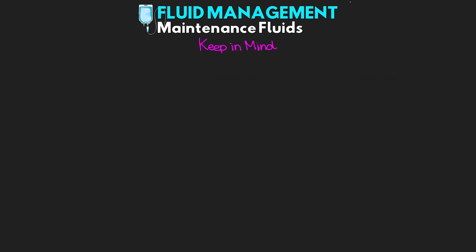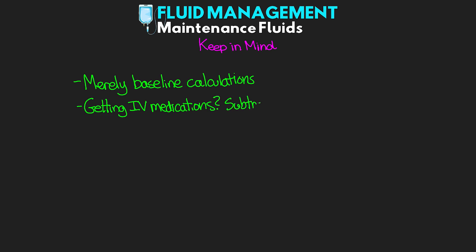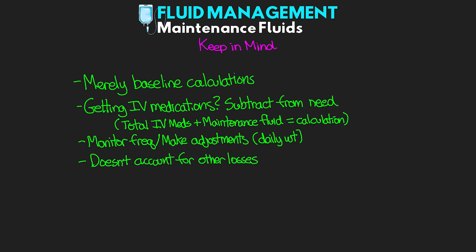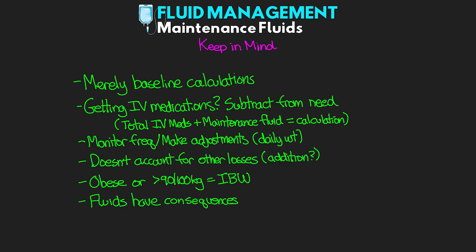A few important things to keep in mind. These are merely baseline calculations. If your patient is receiving fluids for IV medications, subtract that from the calculated need — the total from IV medications plus maintenance fluid should equal your calculation. Monitor patients frequently and make adjustments as needed, including daily weights. These calculations don't account for other losses, which need to be replaced additionally. For obese patients weighing over 90-100 kg, use ideal body weight for their height rather than actual weight, since fat has different fluid requirements. Remember: fluids have consequences and should be used as purposefully as any other medication.